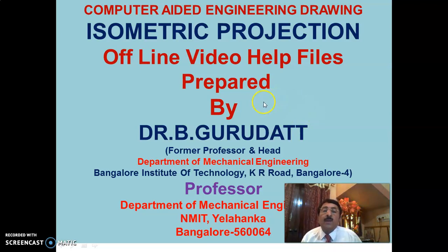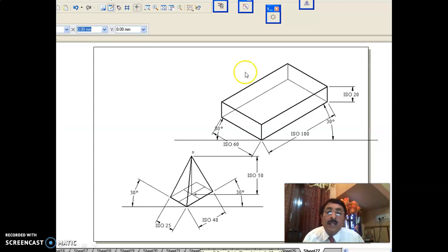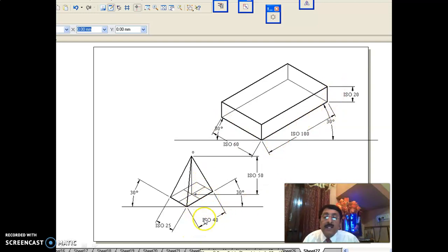Welcome to session 8 on isometric projection. We are doing the main problems given in university exams. In this particular problem there are two solids to be placed one above the other. The bottom solid is a rectangular prism 60 by 100, thickness 20, and above this, placed centrally, is a rectangular pyramid of size 40 by 25 and height 50.